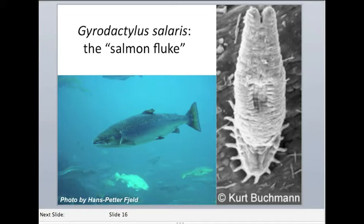One example of a Gyrodactylus parasite that has caused huge economic losses is Gyrodactylus salaris, which is also known as the salmon fluke. It infects Atlantic salmon, which is the fish in the picture, and what the parasite looks like is shown to the right.